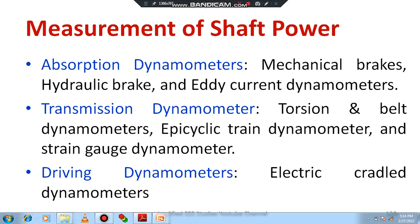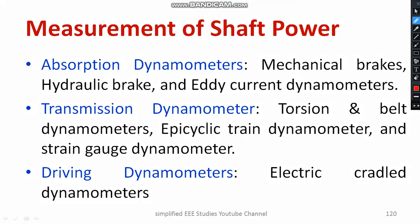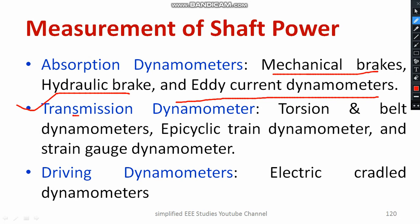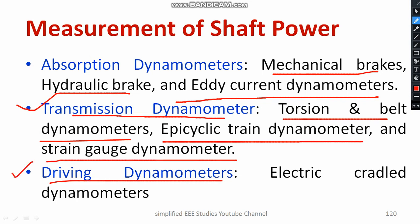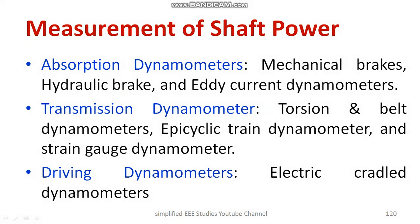The absorption type dynamometer is divided into mechanical brakes, hydraulic brake, and eddy current dynamometer. The transmission dynamometer is segmented into torsion and belt dynamometers, epicyclic train dynamometer, and strain gauge dynamometer. Regarding the driving dynamometer, the electric caddy dynamometer is the major type. Let us understand these varieties of dynamometers for measurement of shaft power.